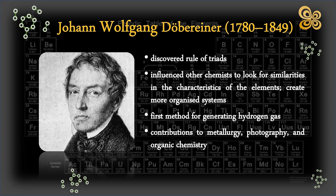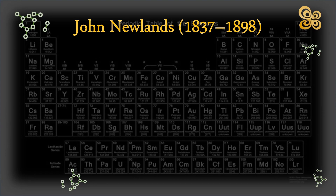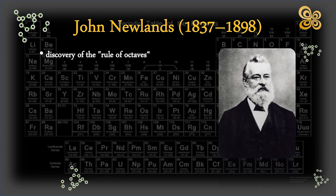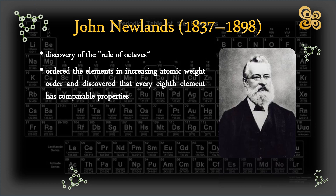An English scientist named John Newlands made contributions to the creation of the periodic table. He made the discovery of the rule of octaves in 1864, for which he is most known. Newlands ordered the elements in increasing atomic weight order and discovered that every eighth element has comparable properties, akin to how notes in an octave have similar musical properties.